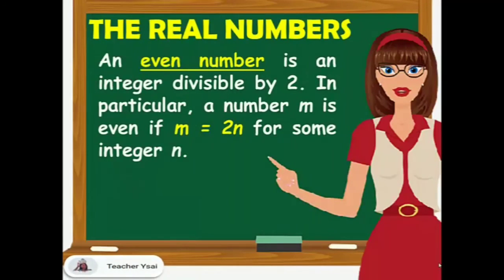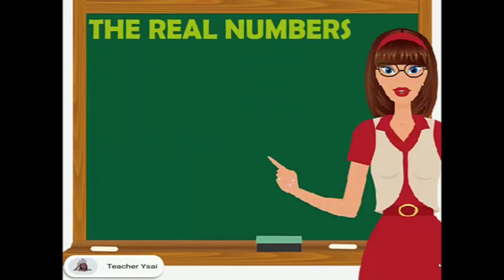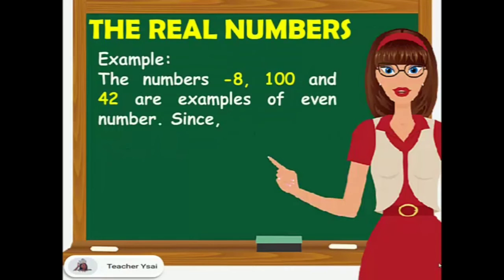An even number M is an integer divisible by 2. In particular, a number M is even if it follows the form M equals 2N for some integer N. For example, the numbers negative 8, 100, and 42 are examples of even numbers, since negative 8 is equal to the product of 2 and negative 4.